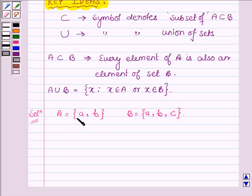Now as we can see every element of A is also an element of B, so A is contained in B. That is, A is a subset of B. Also, all elements which are either in A or in B or in both are